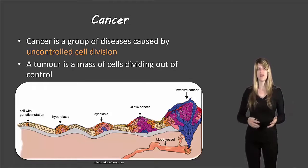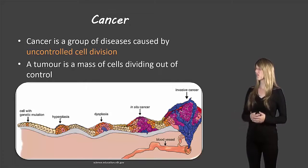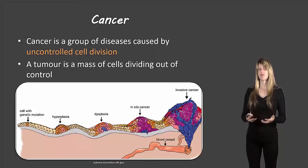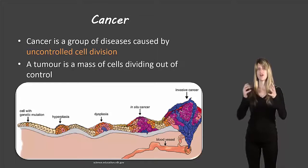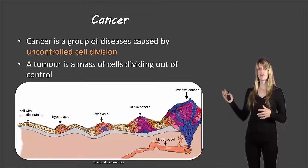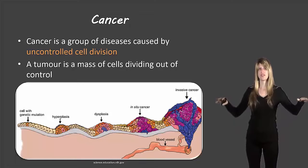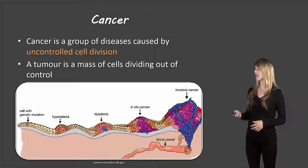Those checkpoints aren't met and the cell just divides out of control. So a tumor is a mass of cells dividing out of control. You can see from the picture at the bottom there starts off with one cell that has some sort of mutation. That cell can divide to form many other cells, and the tumor becomes larger and larger, with much more division compared to the cells on either side which are dividing at a normal rate.